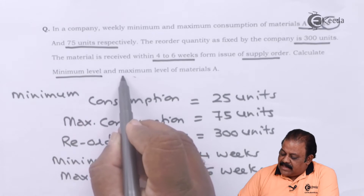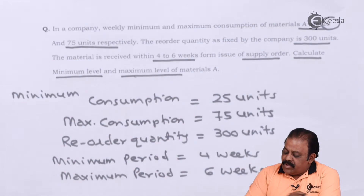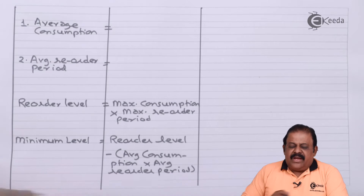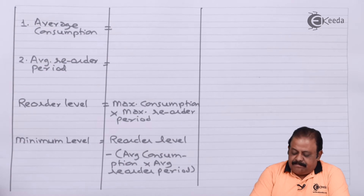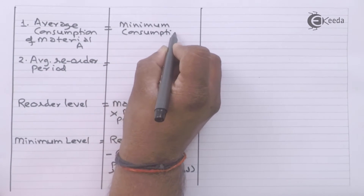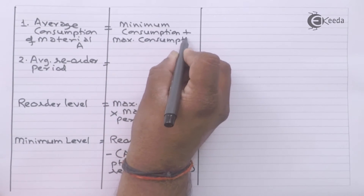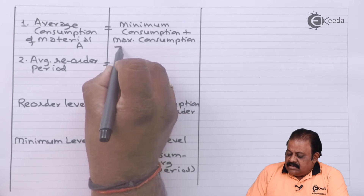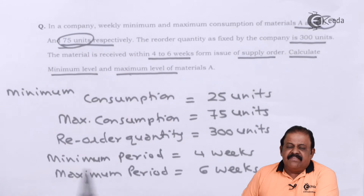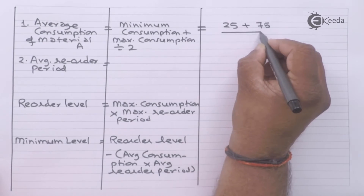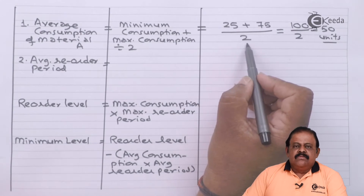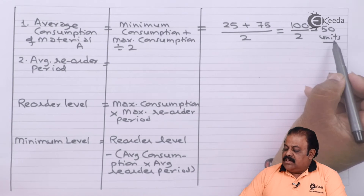We are required to calculate the minimum and maximum level of material A. First, we calculate average consumption: minimum consumption plus maximum consumption divided by two, which is 25 plus 75 divided by two, giving us 100 divided by 2, so average consumption is 50 units.